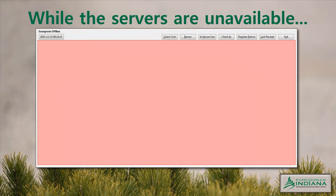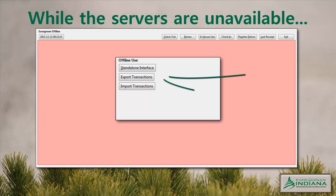Libraries are encouraged to prepare for the downtime by refreshing staff awareness of the offline standalone mode interface. Please note that in 2.7, the Last Receipt reprint functionality is non-operational. We recommend exporting a copy of your transactional data to maintain a backup of each day's activity if you wish to be doubly sure your data is available for upload on the 4th.